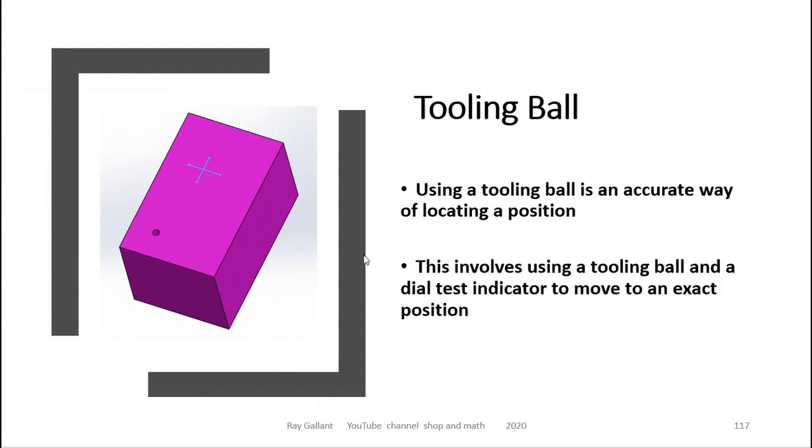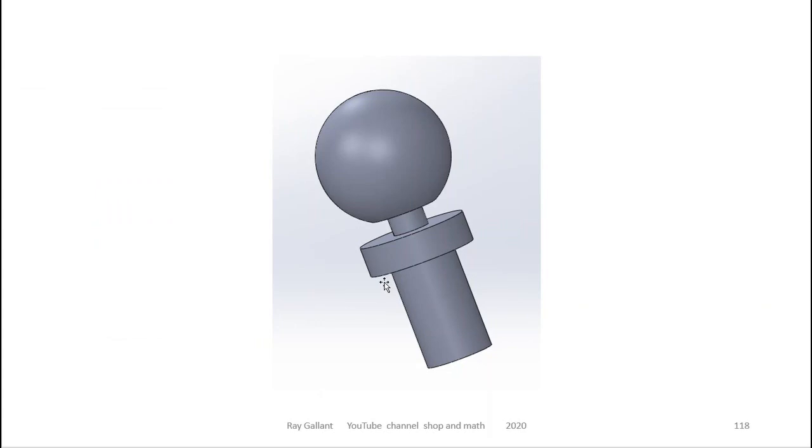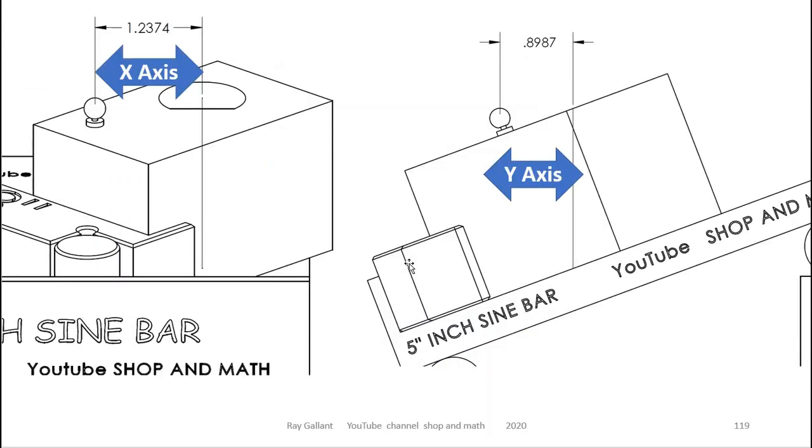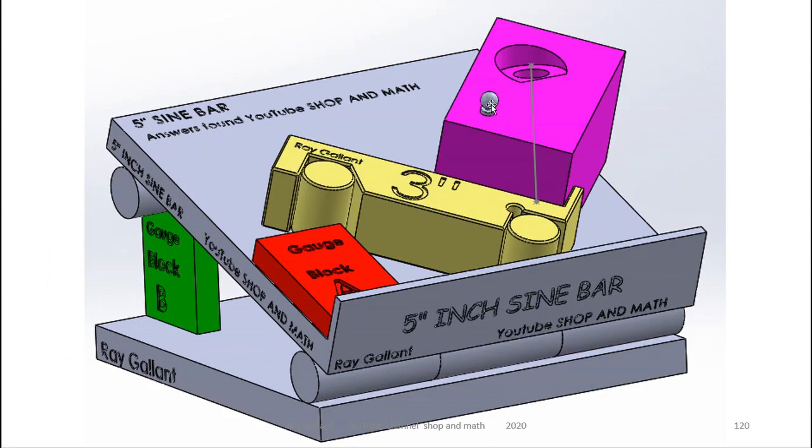So we're going to use a tooling ball. That's why there's a hole here that's been drilled and reamed. So our tooling ball looks similar to this. So we did the calculations for you already. We're going to move over in x this amount and over in y this amount. So here's our tooling ball. We're going to indicate the tooling ball and move to position.